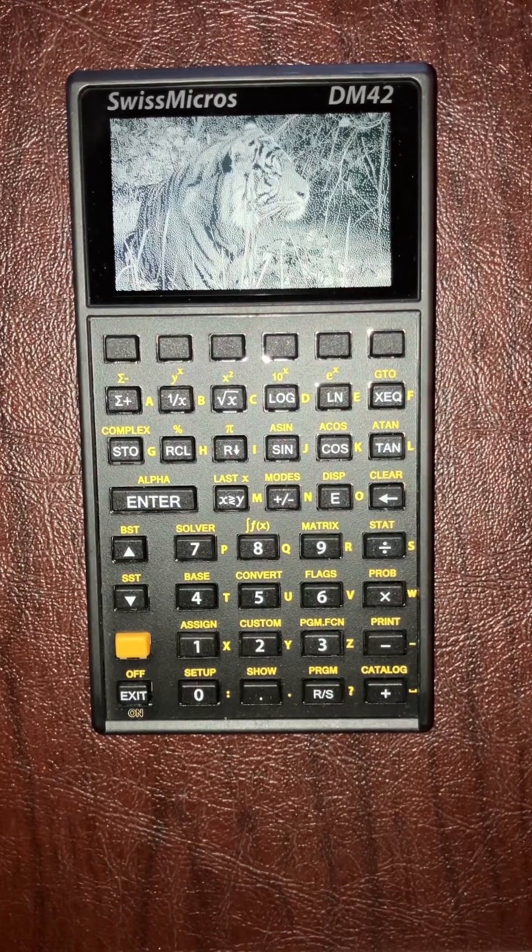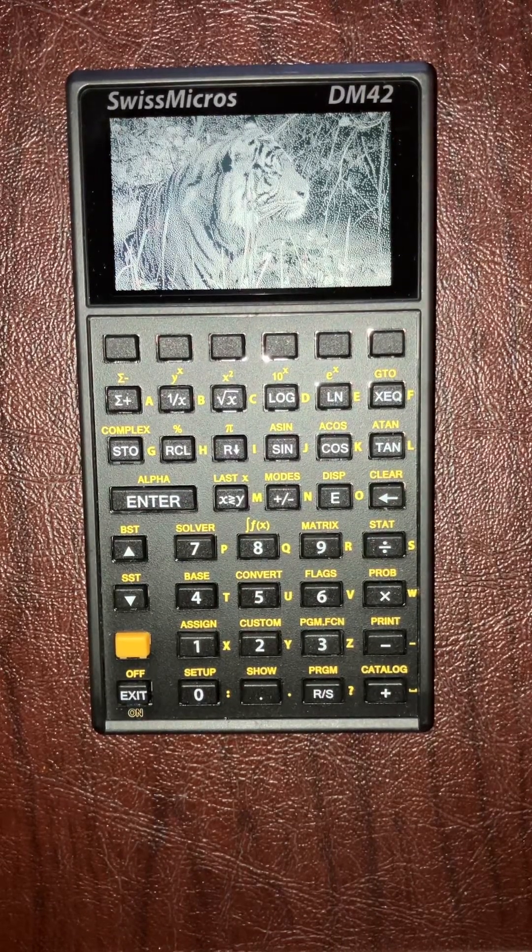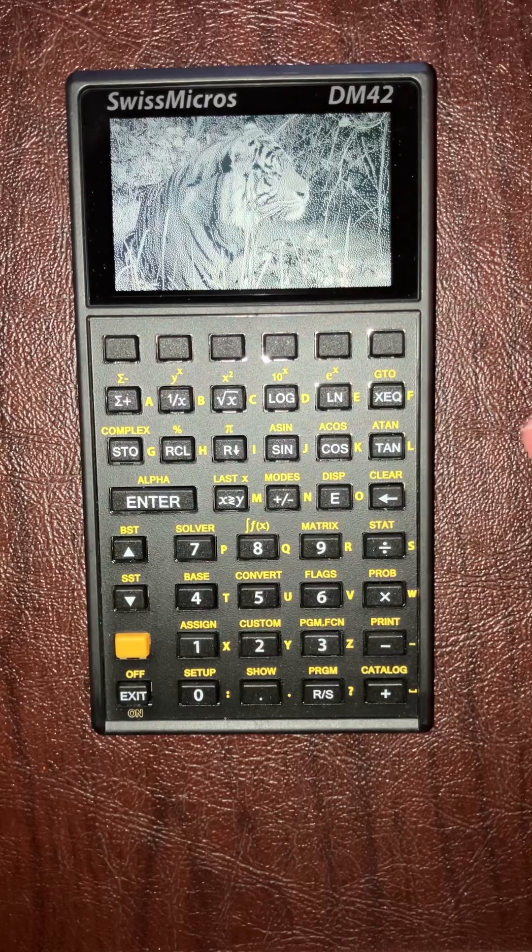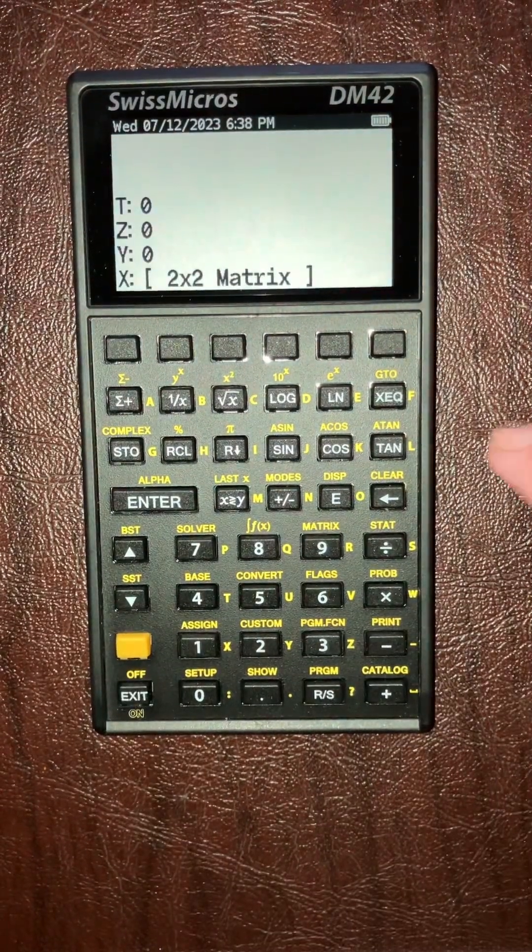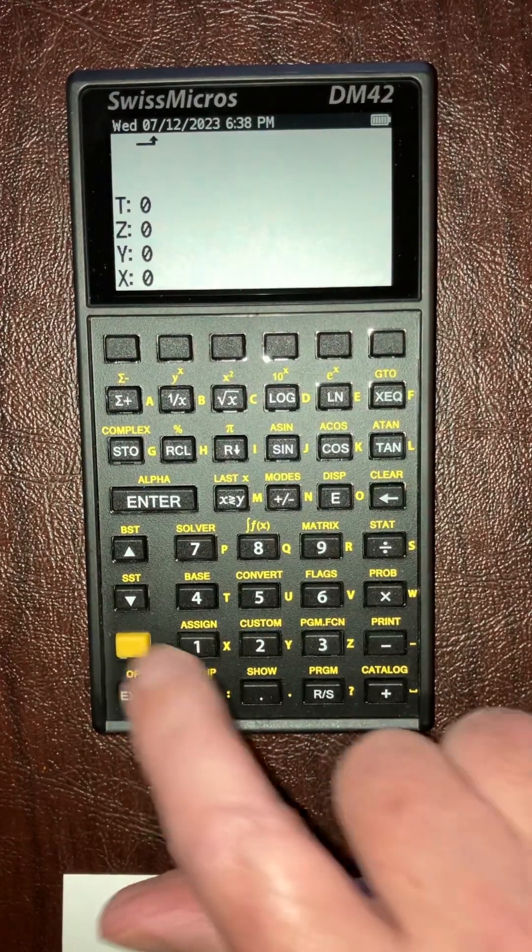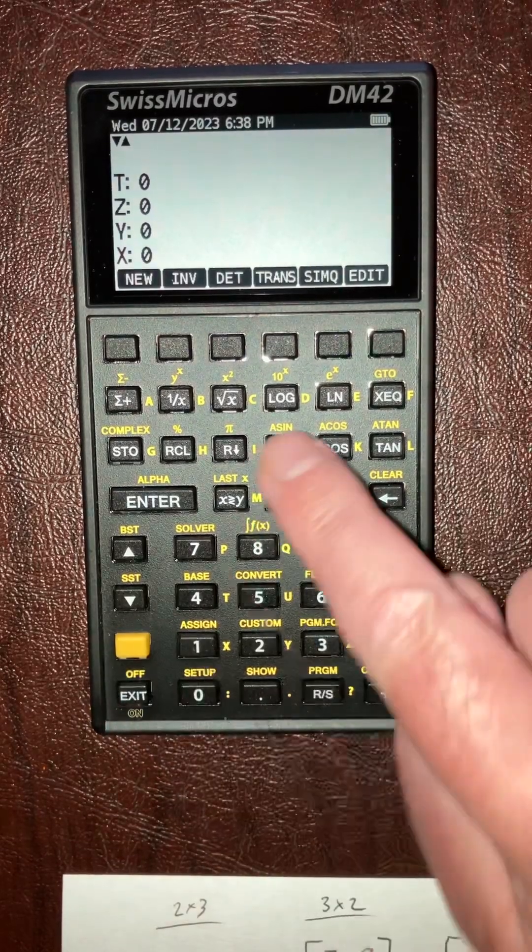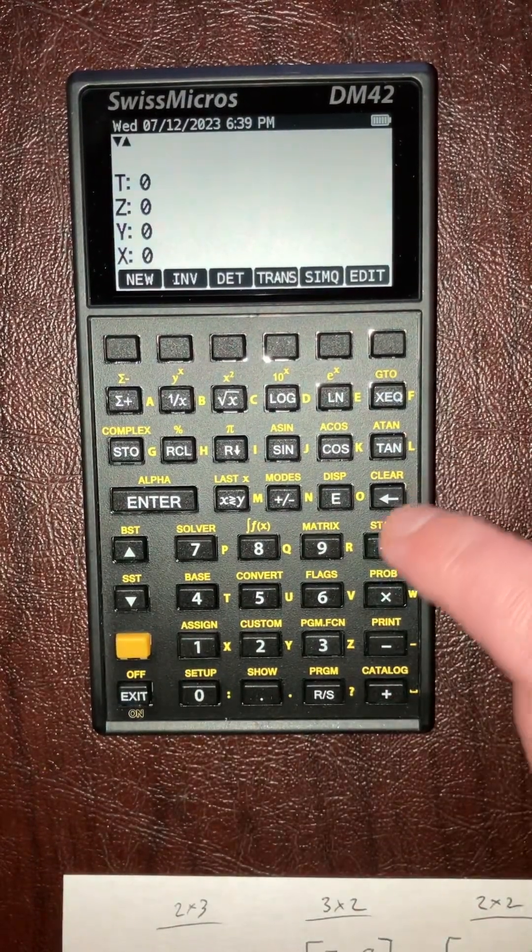So I had to figure out how the DM42 deals with matrix operations. Let's turn it on and see here. I'll clear that out. First of all, go into the matrix submenu - orange button, matrix.